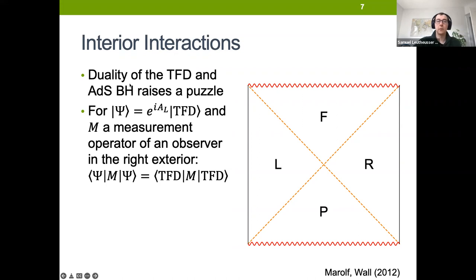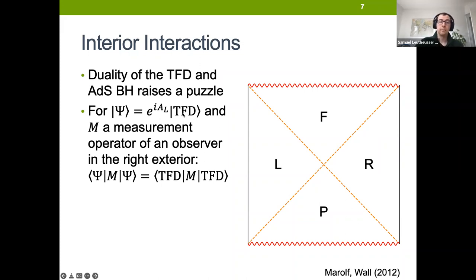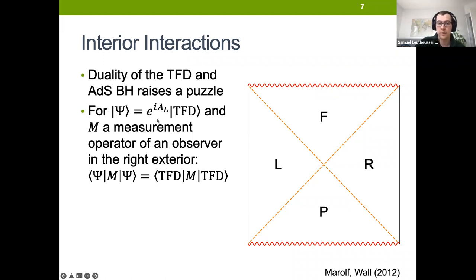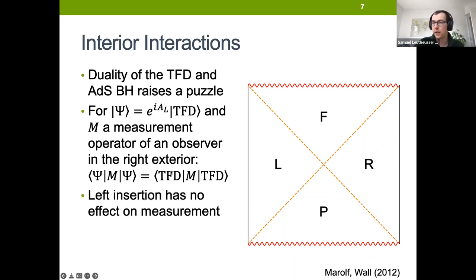The duality of the thermal field double and this ADS black hole raises a puzzle. From the boundary perspective, I can imagine constructing this state in two copies of the boundary theory, where I've acted some unitary on the left side on the thermal field double state. Then I want to see whether a measurement by an observer in the right CFT can detect the effects of that unitary insertion. Of course, the answer is no, because that measurement operator from the right side commutes with this unitary insertion — all expectation values are the same as if there was no insertion at all.